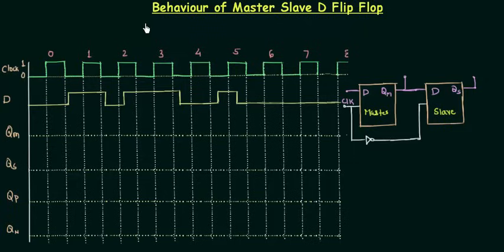In this presentation we will see the behavior of the master-slave D flip-flop. I will draw output waveforms, and once done, I will draw few important results: what is a glitch, how to remove a glitch, and what is the relation between the master-slave flip-flop and the negative edge triggered flip-flop. For that we have to find QM, QS, QP, and QN — the outputs of the master, slave, positive edge triggered, and negative edge triggered D flip-flops respectively.